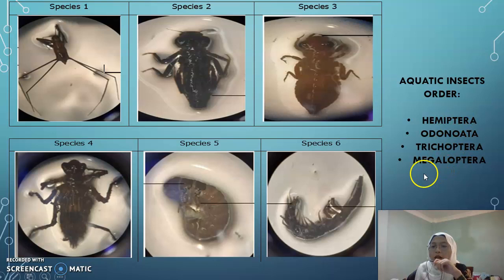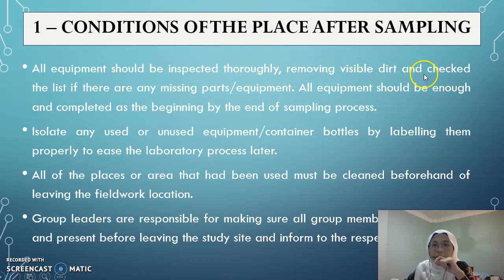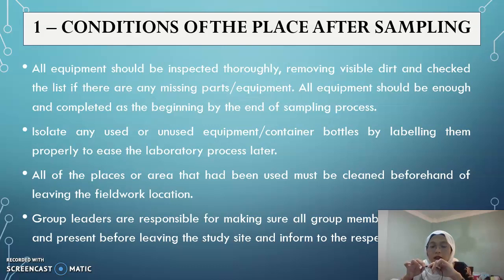For the end of fieldwork inspection: all equipment should be inspected thoroughly by removing visible dirt and checking the list for any missing parts. All equipment should be complete at the end of the sampling process as it was at the beginning. Any used or unused equipment and bottles should be isolated and labeled properly to ease the laboratory process.